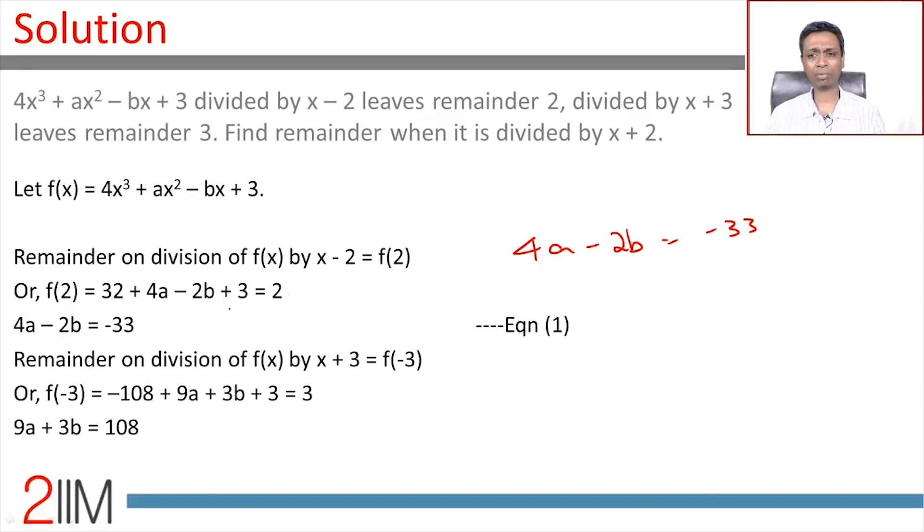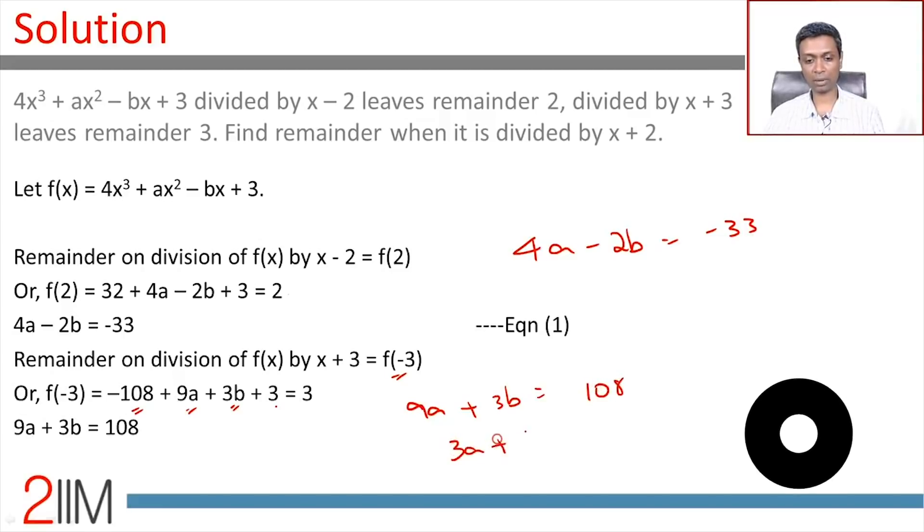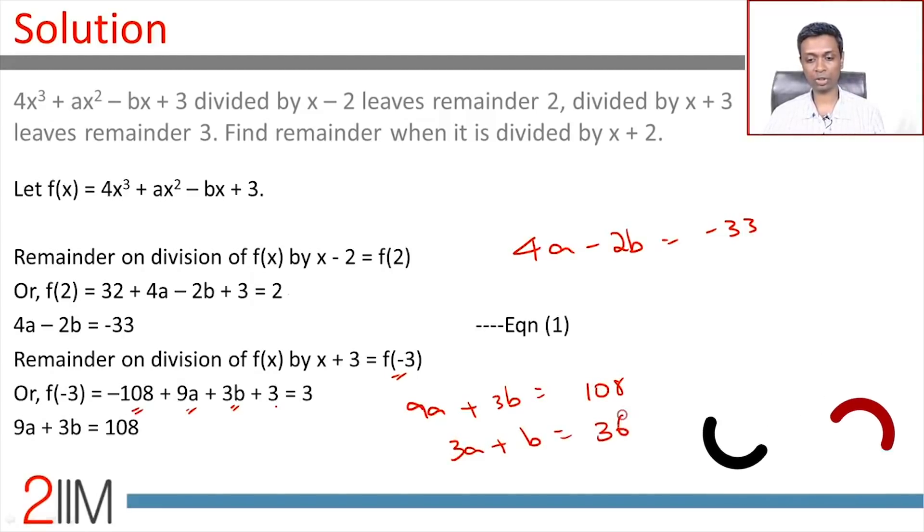On division by x + 3, remainder should be f(-3). So it is -108, 4 times -27 plus 9a plus 3b + 3 equals 3, or 9a + 3b is 108, or 3a + b is 36.